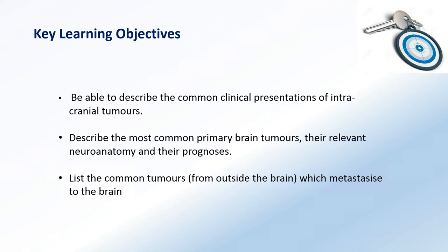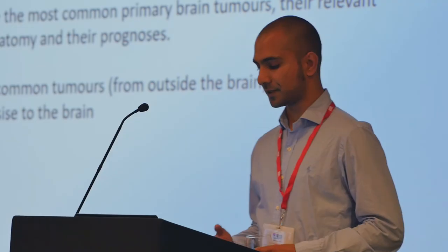By the end of the talk, you should be able to describe the common clinical presentations of intracranial tumors - brain tumors - to describe the most common primary brain tumors and their relevant neuroanatomy and also the prognosis of some of these. And finally, to list the common tumors that arise outside the brain.